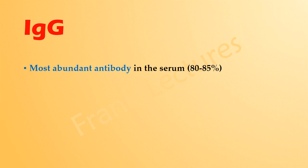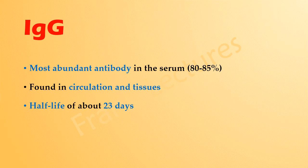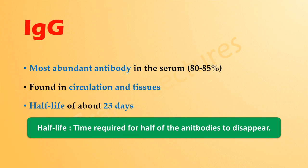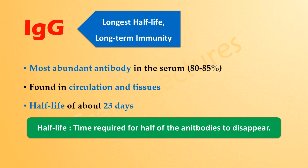IgG is the most abundant antibody in the serum, comprising about 80 to 85% of all serum antibodies. It is most commonly found in circulation and tissues — besides blood, it is predominantly found in lymph fluid, cerebrospinal fluid, and peritoneal fluid. Its half-life in serum is 23 days, which is the longest among all antibody classes. Because of this long half-life, immunoglobulin G provides long-term immunity.